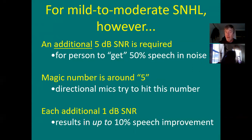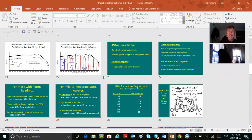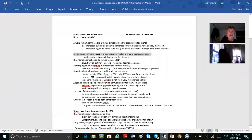Directional microphones pick up sound in the direction you're facing and will maximally increase your signal-to-noise ratio by about 5 dB. But in real life, it's going to be more like 2 to 3 dB, because real life is not a nice, tight lab situation.